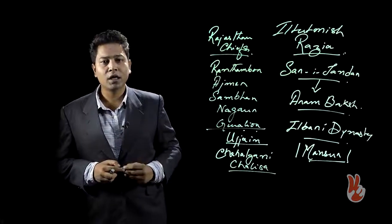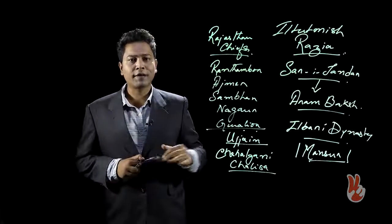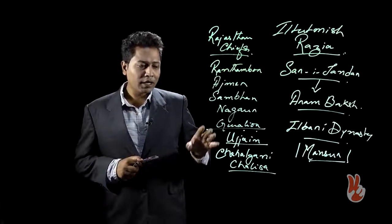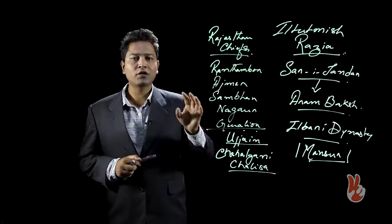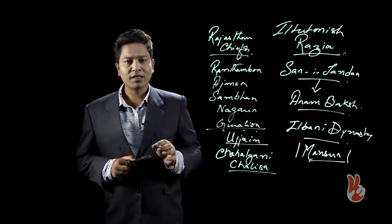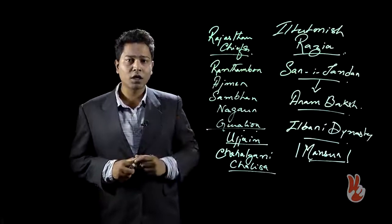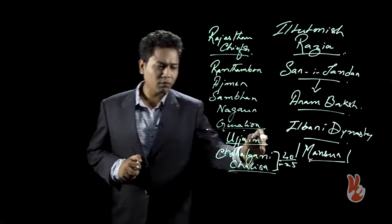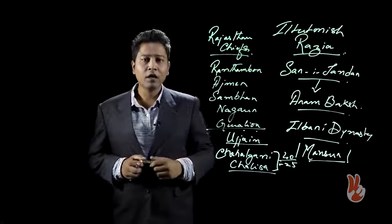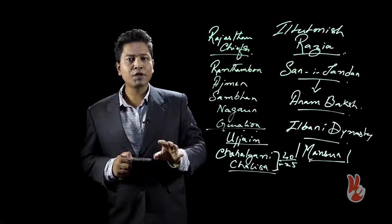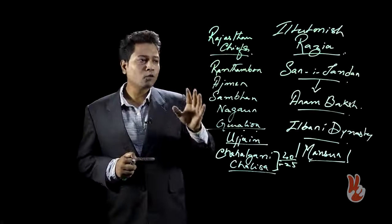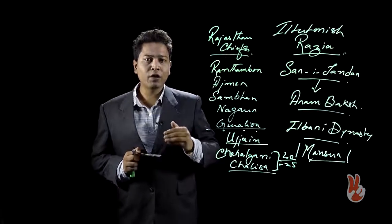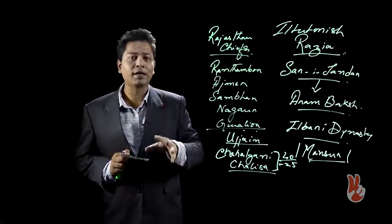These are names given to them by Barani and his claim that there were 40 important nobles who used to control the empire, the Sultanate empire. His claim is sometimes disputed on the basis of what Minaj-us-Siraj says that there were never 40 important nobles, but there were indeed 25. So, there is a conflict between these ideas of the Chehalgani and the Chalisa, but we know that the supreme conflict during this period is between the Sultanate and the Turkish nobility.